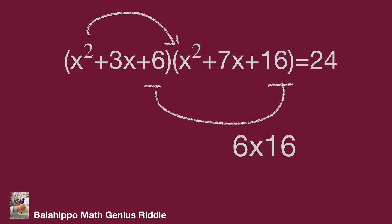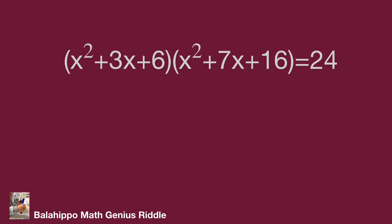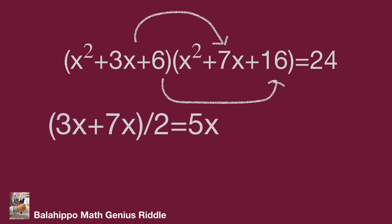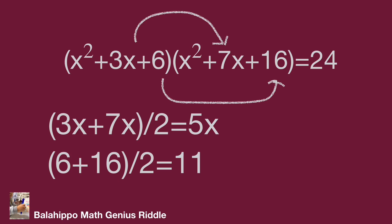I am going to leverage the average value to make the question easy. Check the terms with x: 3x and 7x, and the constants 6 and 16. The average of 3x and 7x is 3x plus 7x over 2, equal to 5x. And the average of 6 and 16 is 6 plus 16 over 2, equal to 11.